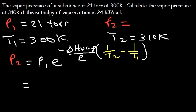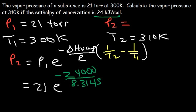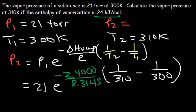Let's plug in the information. P1 is 21, and the enthalpy of vaporization is 24 kilojoules per mole, so we multiply by 1000 to get 24,000 joules per mole. Dividing by 8.3145 with T2 = 310 and T1 = 300: 1/310 gives 3.2×10⁻³, subtract 1/300 to get −1.075×10⁻⁴, multiply by −24,000 to get +2.58, then divide by 8.3145 to get 0.31037.